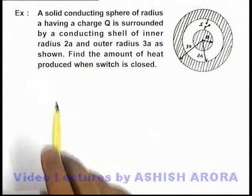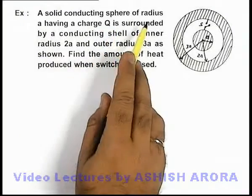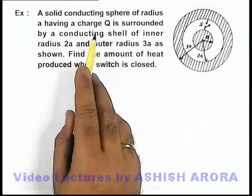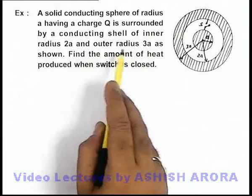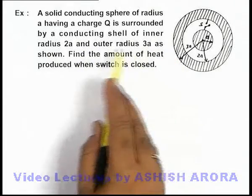In this example, we are given that a solid conducting sphere of radius a, having a charge Q, is surrounded by a conducting shell of inner radius 2a and outer radius 3a, as we can see in the figure.